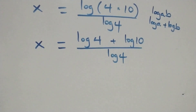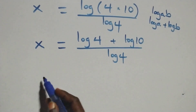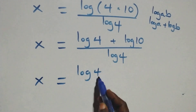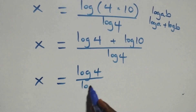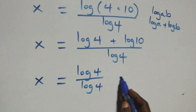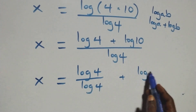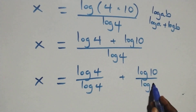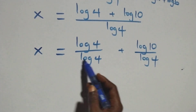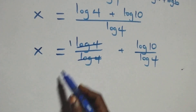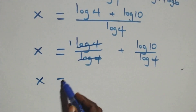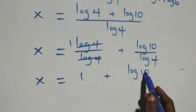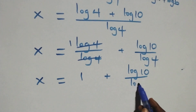Then we have x equals to log 4 over log 4, and log 4 cancels with each other leaving 1, which implies x equals to 1 plus log 10 over log 4.